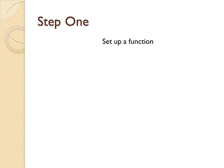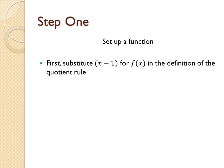For step 1, we need to set up our function which we will be evaluating. So the first thing we will do is substitute x minus 1 for f of x in the definition of the quotient rule. This results in h prime of x equals g of x times f prime of x minus x minus 1 times g prime of x all over g of x squared.